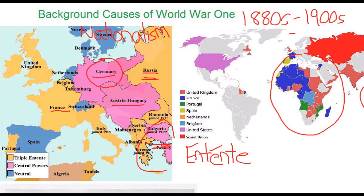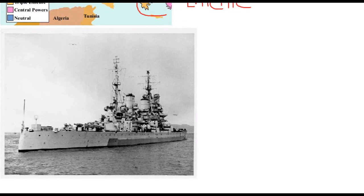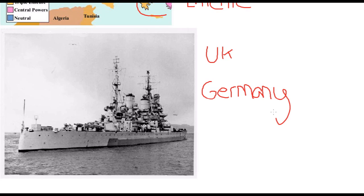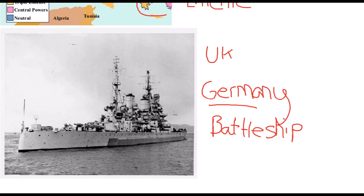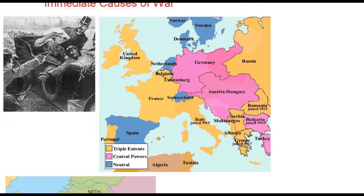There was also an arms race forming during this time period — growing military buildups, especially between the United Kingdom and Germany. Great Britain had the world's most powerful navy, and Germany began to challenge this. Germany recognized that it needed a powerful navy to rival Great Britain, and so Germany began a race to build dreadnoughts, which were these early battleships. All these factors gradually began to destabilize Europe and put it far more at risk of war.